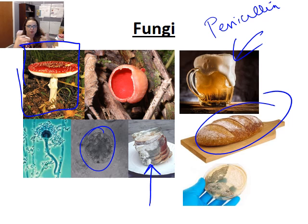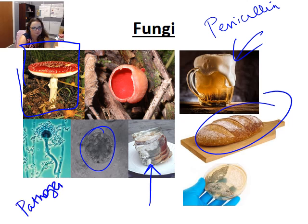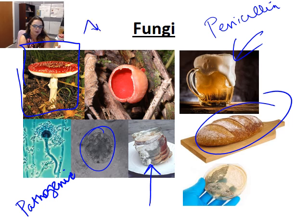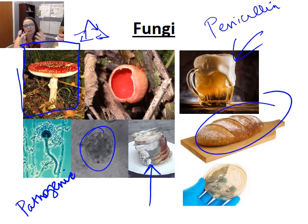Very few fungi — probably fewer than about a hundred — are actually capable of causing disease in humans, i.e., are pathogenic. Most fungal infections that can cause disease in humans are considered opportunistic: they cause disease in patients who are immunocompromised. Fungi are the master recyclers of the world — they are great at breaking down dead and dying tissue, particularly organic matter, and because of that some of them are able to cause invasive disease in tissue.